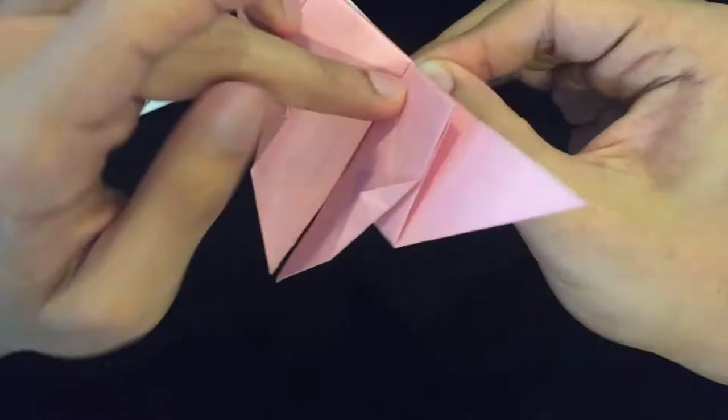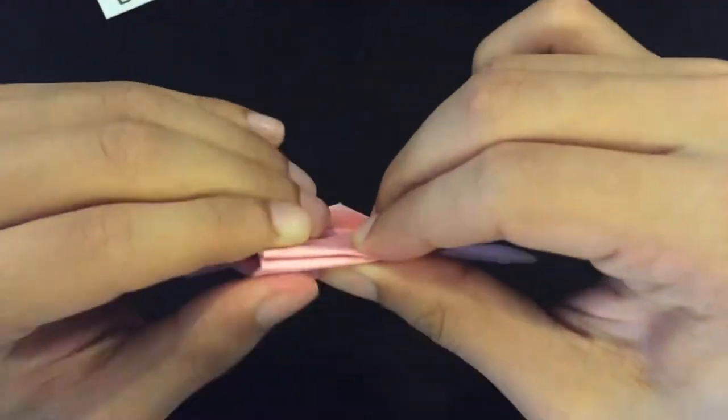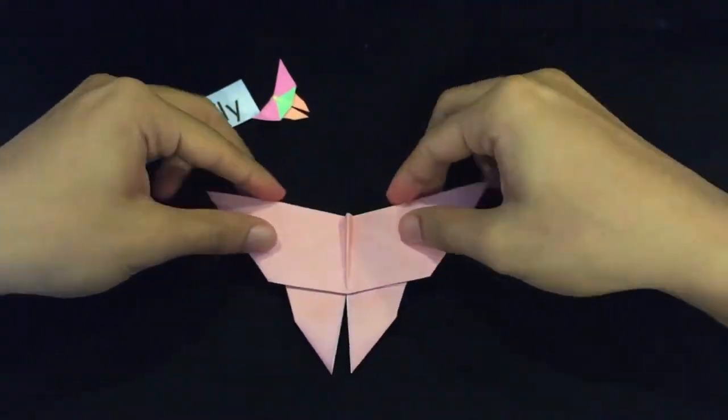Then you fold both wings to make the body and open it up as the final step. Here is the finish.